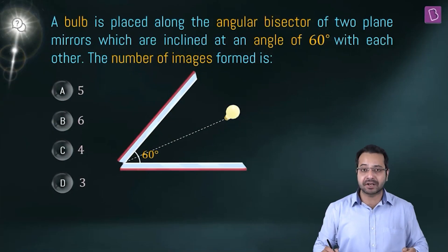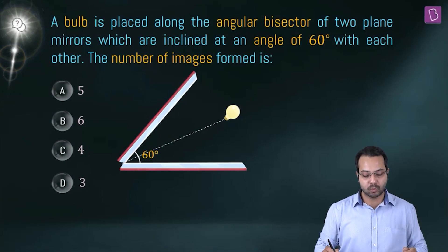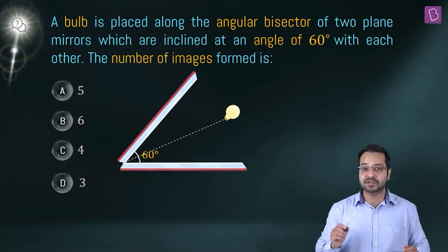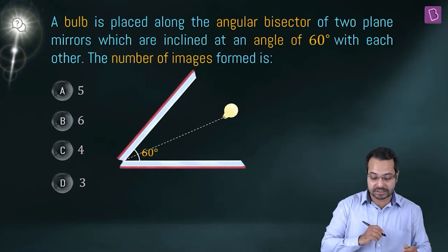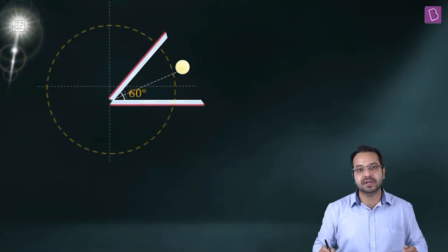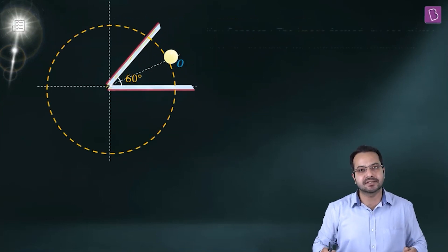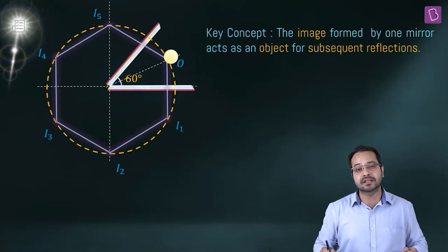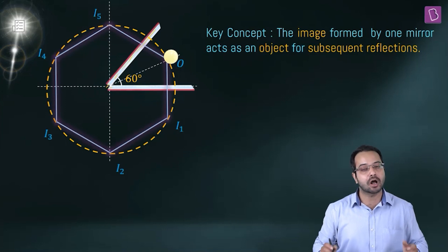A bulb is placed along the angular bisector of two plane mirrors which are inclined at an angle of 60 degrees with each other. We need to figure out how many images are formed.